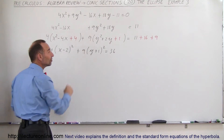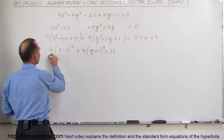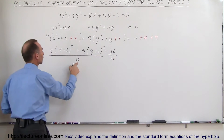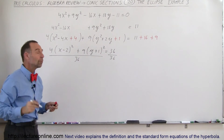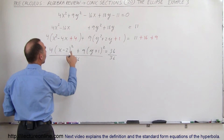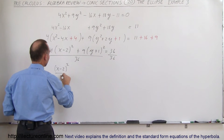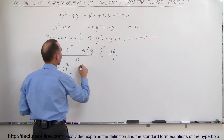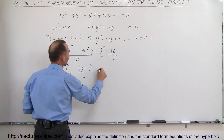So the trick is to divide both sides by the product of the two coefficients: 4 times 9 is 36. Dividing both sides by 36, we get: 4 divided by 36 is 1/9, so we write (x minus 2) squared divided by 9, plus 9 divided by 36 is 1/4, so we write (y plus 1) squared divided by 4, and that equals 1.